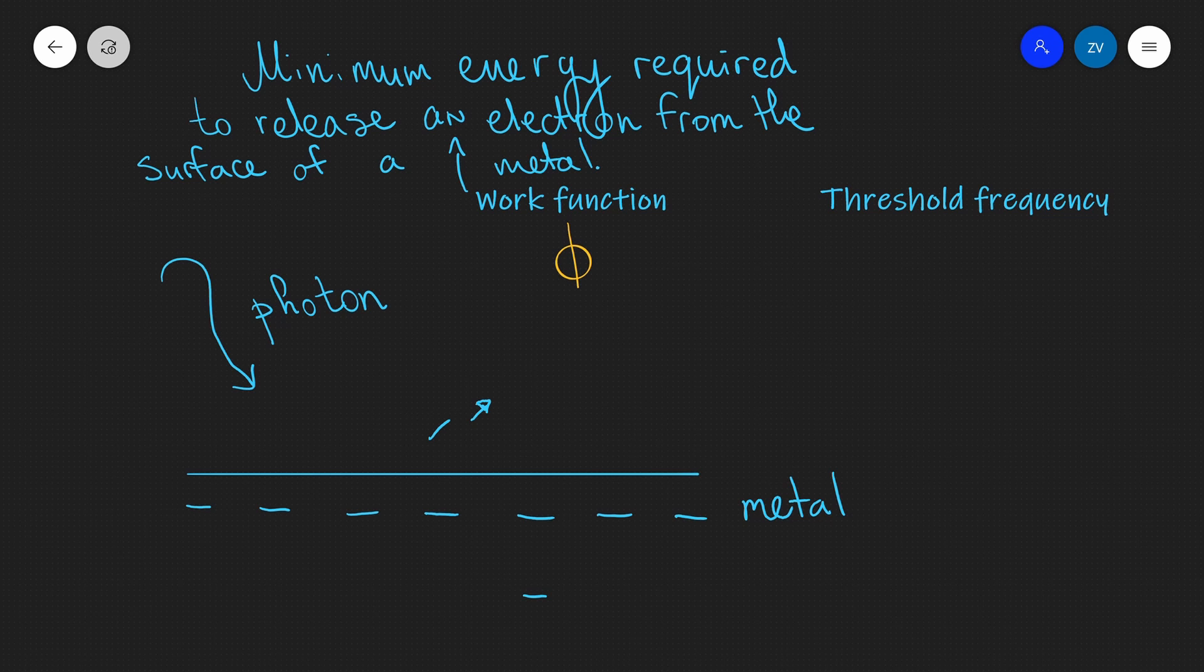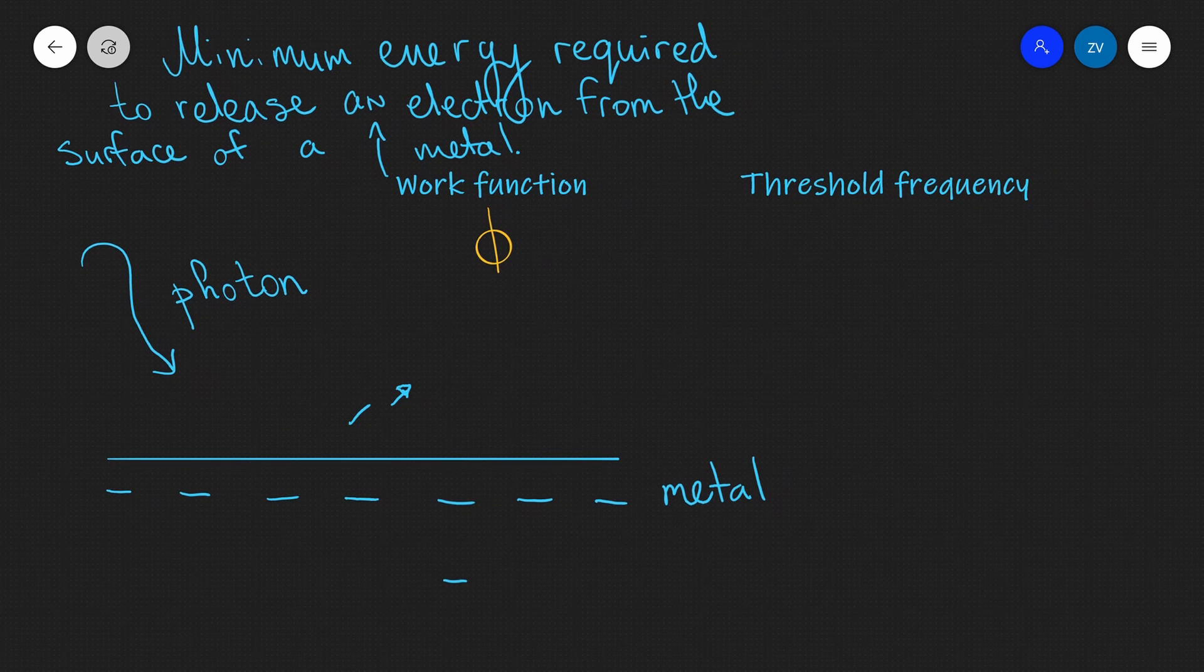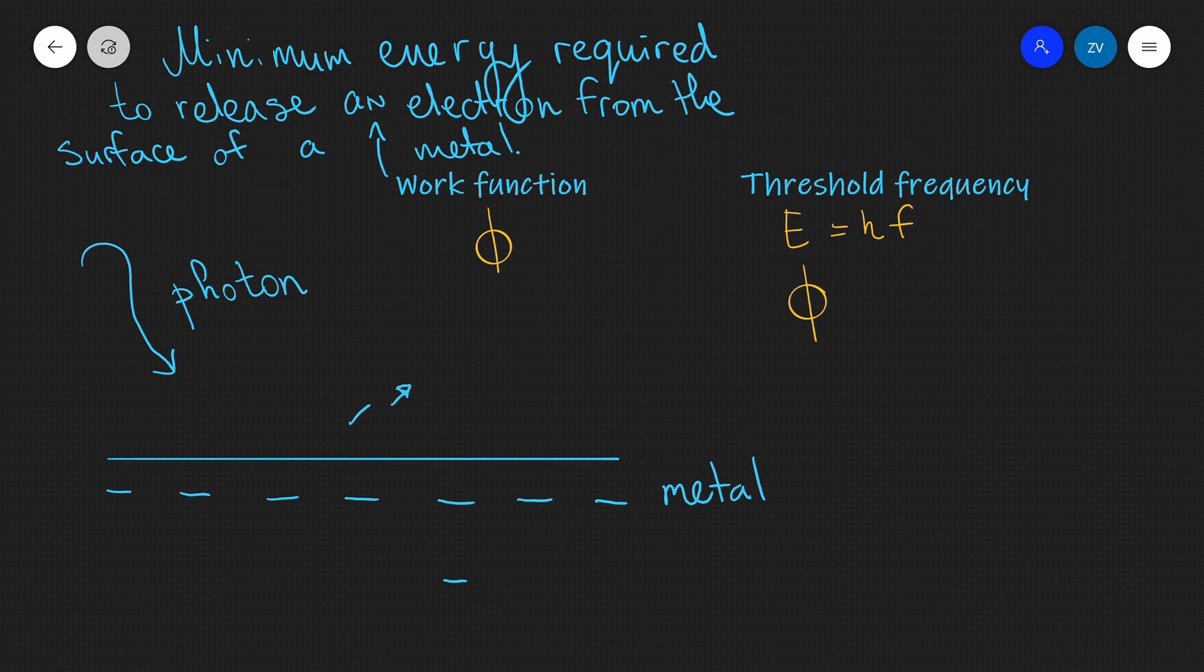Now, what is threshold frequency? If we remember, in general, the energy of a photon is given by Hf. Because the work function is just energy, it's the minimum energy, we can say that the work function will correspond to a particular frequency. This frequency is known as the threshold frequency.